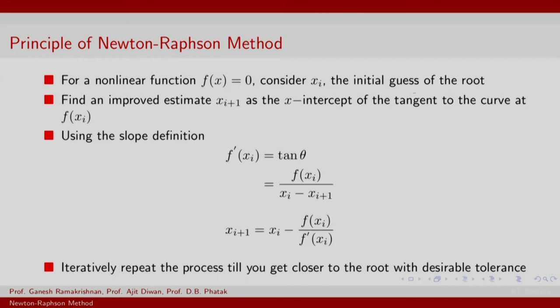If x_i was the initial guess of the root, the idea is to find an improved estimate x_{i+1} as the x-intercept of the tangent to the curve at f(x_i).